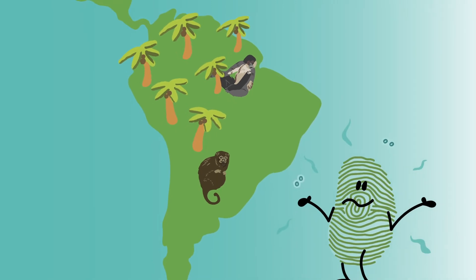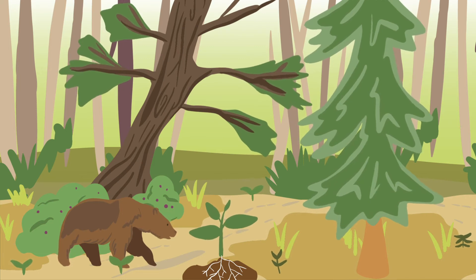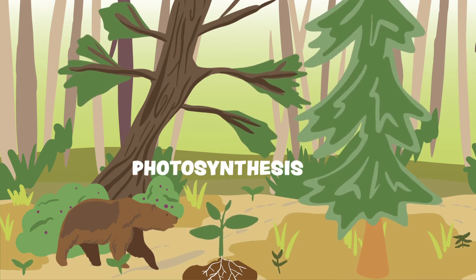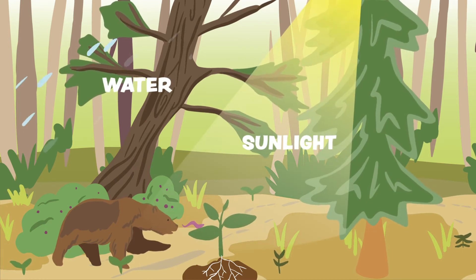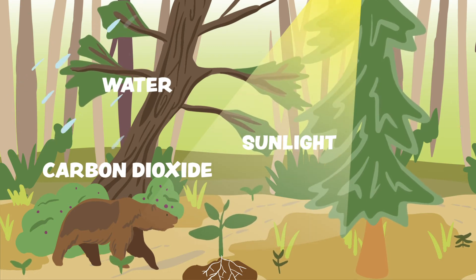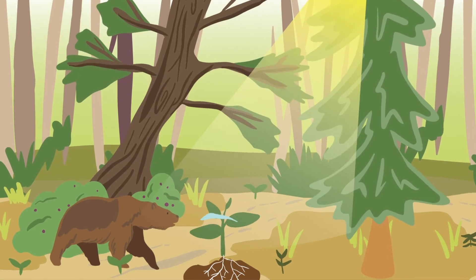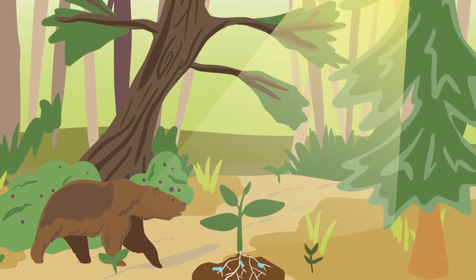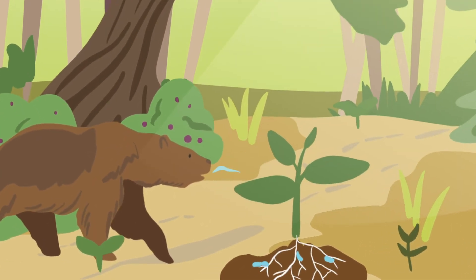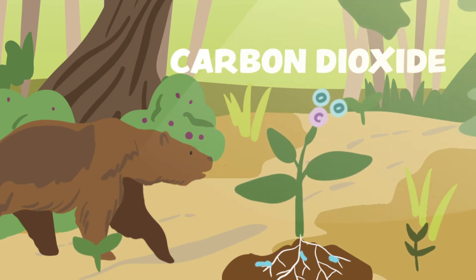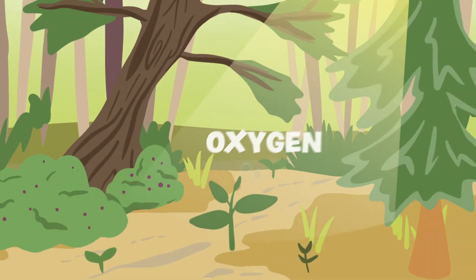But how do plants produce oxygen? Plants produce oxygen when they make food for themselves through a process called photosynthesis. Plants use three things to make food: sunlight, water, and carbon dioxide from the air. Animals and people, like you and me, are breathing out carbon dioxide right now. Plants absorb water through their roots and absorb sunlight and carbon dioxide through their leaves. Plants use the sunlight to turn the carbon dioxide and water into food. During this process, plants release oxygen into the world.